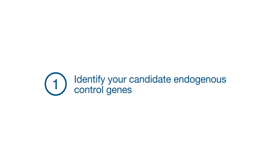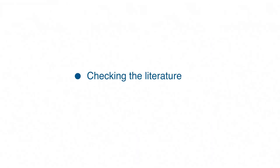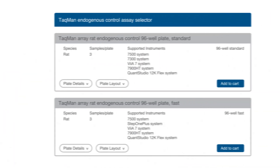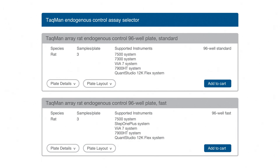First, identify candidate endogenous control genes. Ways to do this include checking the literature, such as our application notes, or simply testing some common controls that you can find using the Applied Biosystems TaqMan Endogenous Control Assay Selector Tool. You'll need to test at least one control gene, but it would be helpful to test two or three candidates to find the one that gives the best results.